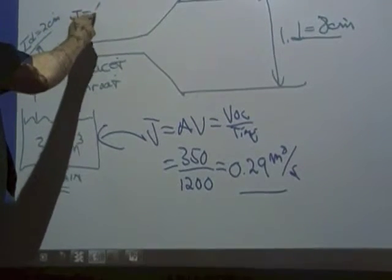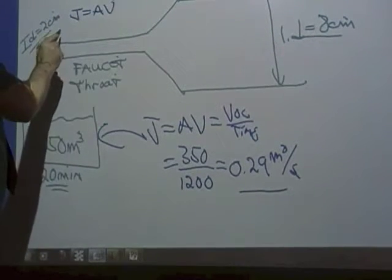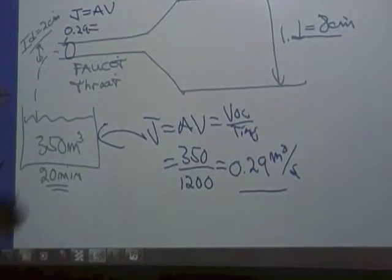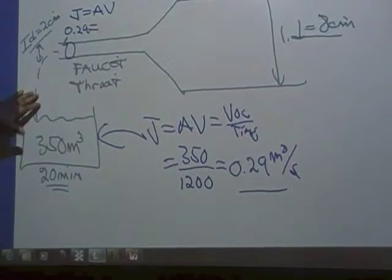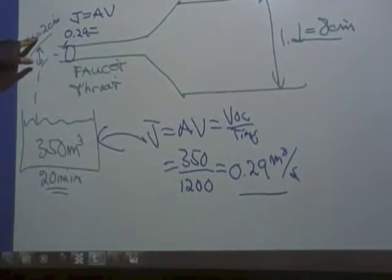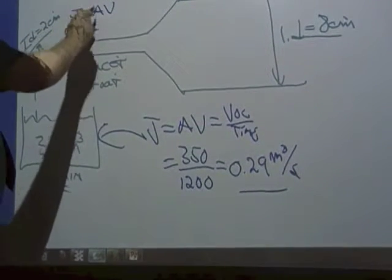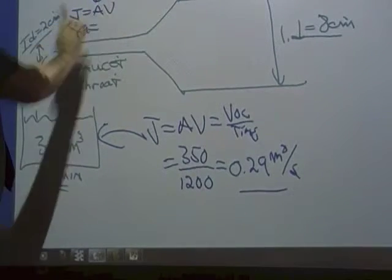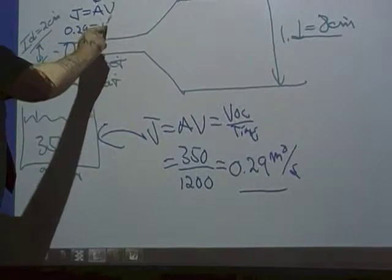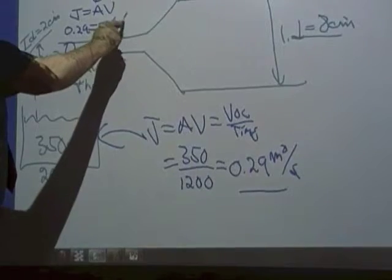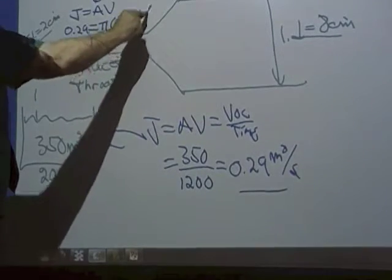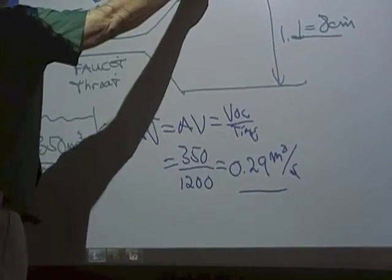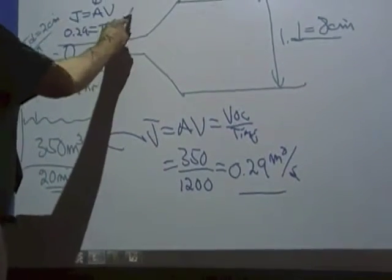J equals A1V1. So I'm thinking 0.29 equals, these are perfect circles. It's going to be 0.01 times pi. So the area is pi r squared. Perfect circle. And solve for the V. So I'm thinking 0.029 equals pi, 0.01 squared. Thank you. So, it clearly says 0.01 squared.